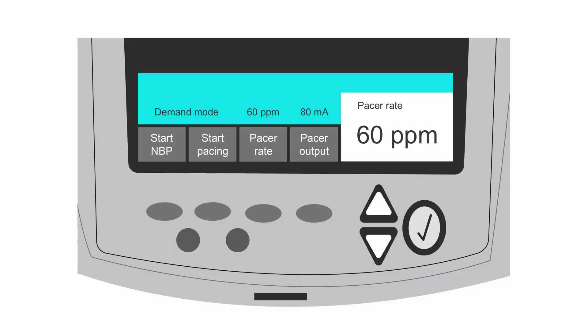Once the pace feature is turned on, there are only two settings you need to control. The rate button sets the heart rate you want, and the output is the amount of energy measured in milliamps required to conduct electricity through the patient's chest wall and heart.